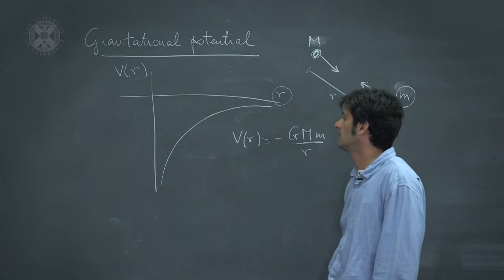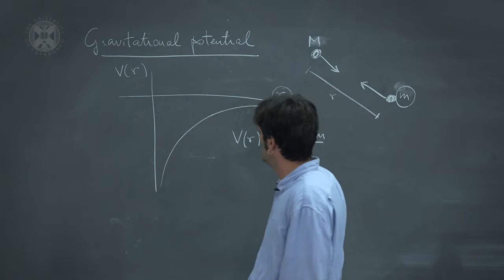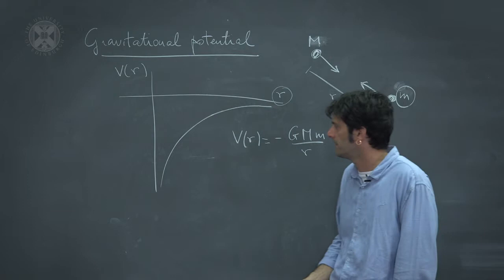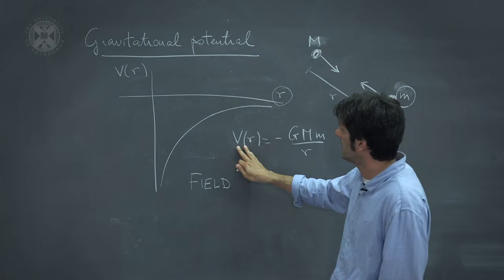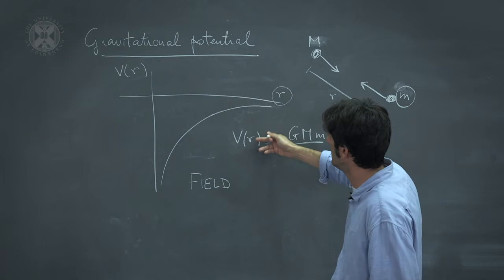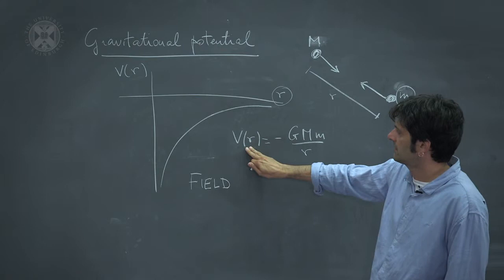Now this is the first example that we see of a field. A field is some mathematical function which depends on the spacetime coordinates, in this case simply on the distance r.